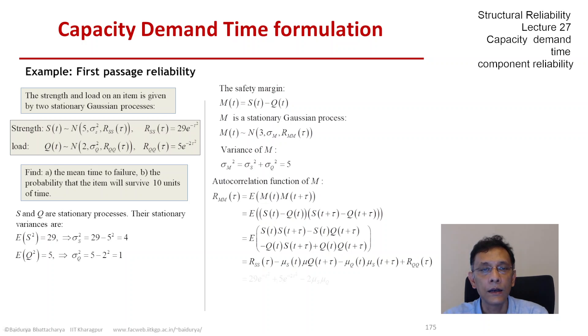With all the quantities defined, we find that R_mm(tau) is a function of tau squared as well as the individual means. Let us just make sure that a few things add up.